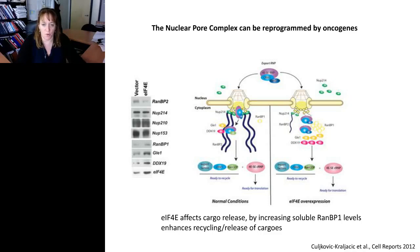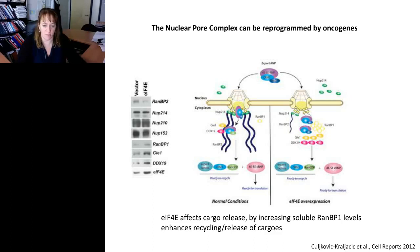When we look at the data, by overexpressing 4E we see substantial reduction in RAN-BP2 — consistent with a loss in cytoplasmic fibrils — and proteins like RAN-BP1 become highly elevated to compensate, allowing cargo release to happen in the soluble compartments. In summary, 4E affects cargo release step rates in this process by increasing soluble RAN-BP1 levels, enhancing recycling of export factors and release of cargoes.